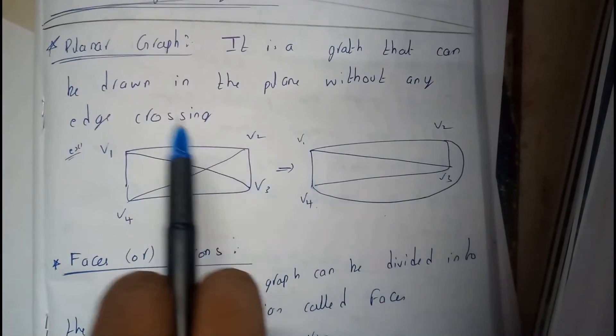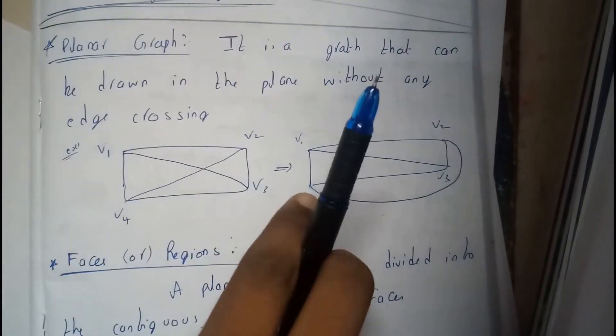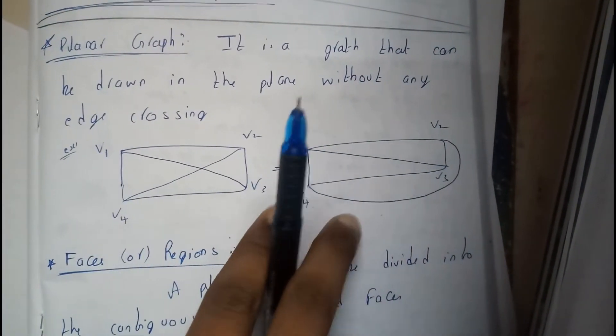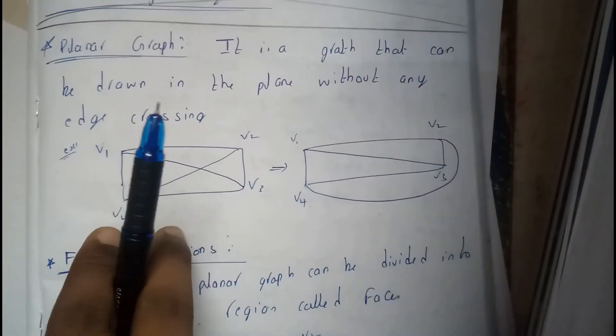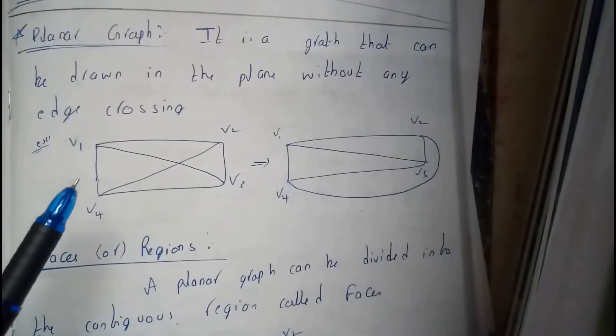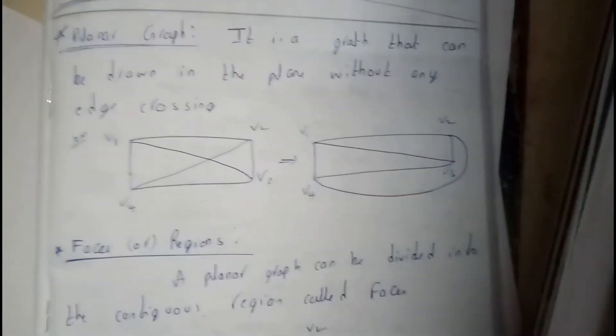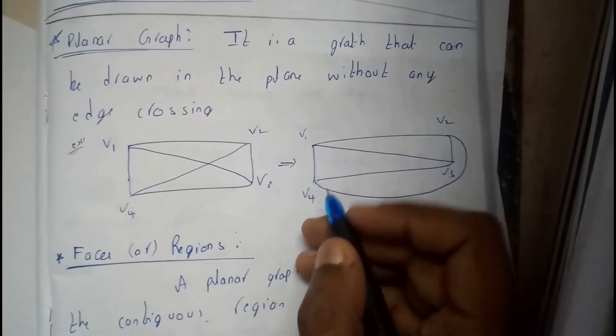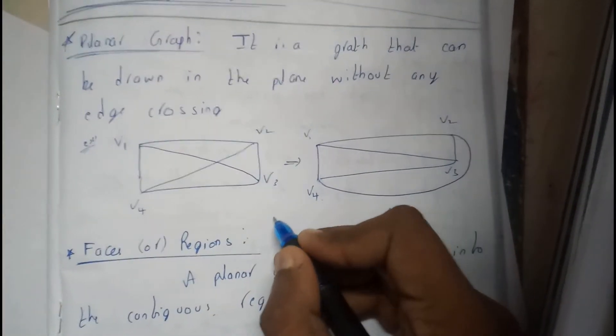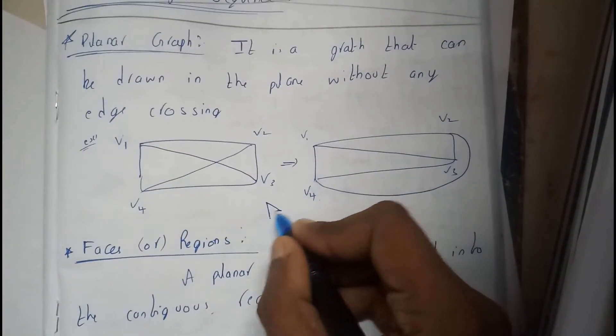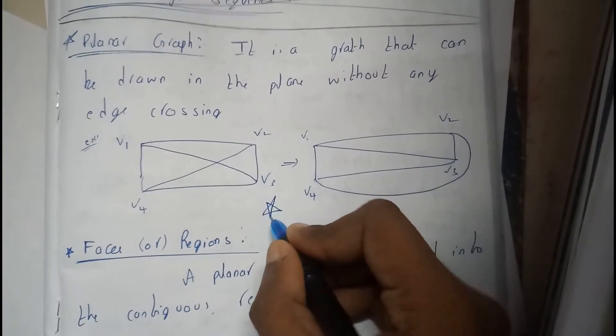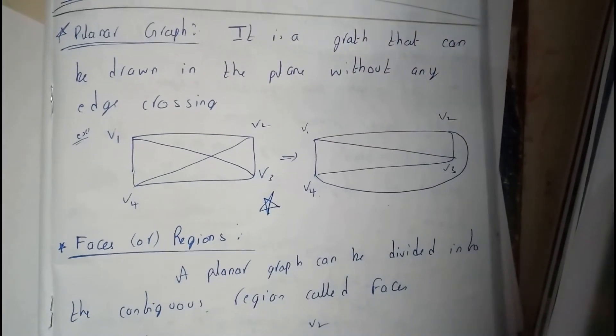A graph in which there are no crossing edges is a planar graph, whereas a graph in which there are crossing edges is a non-planar graph. This is a non-planar graph.